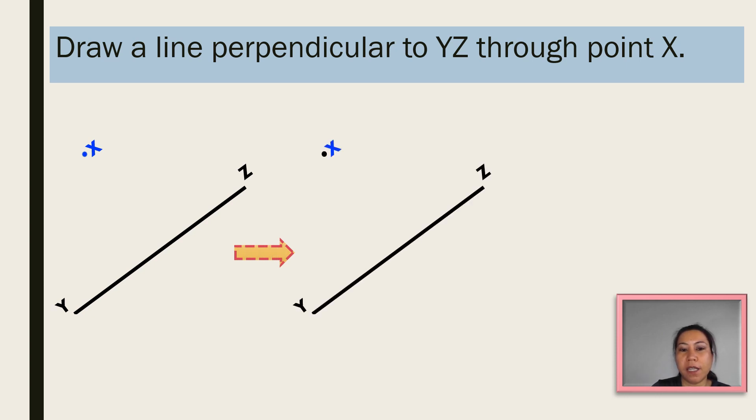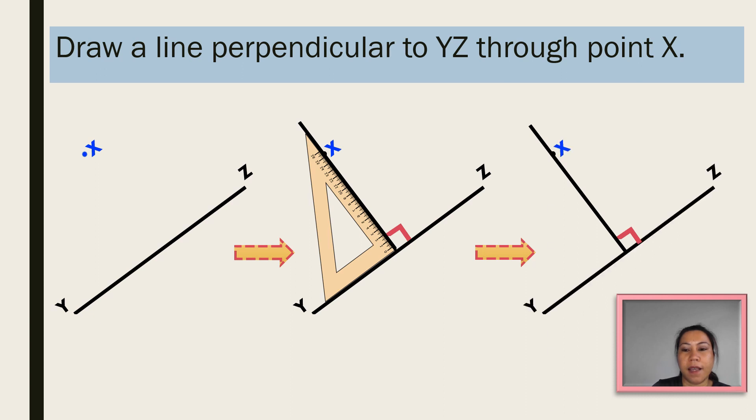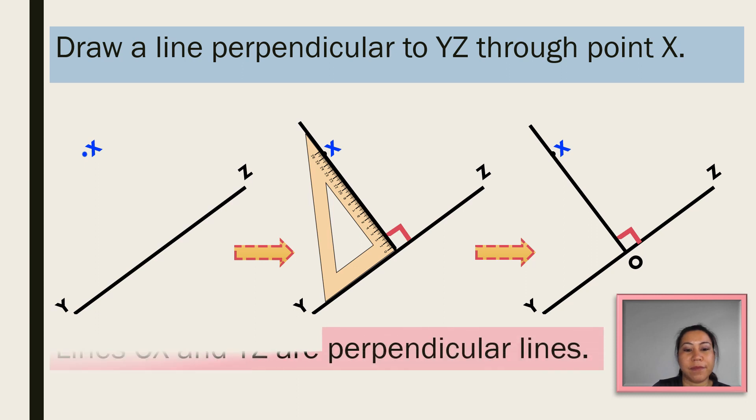Simply, you just get your set square and put it on line YZ. Using the edge of the set square, draw a line passing through the point X and name that line OX. Lines OX and YZ are perpendicular lines. So, line OX is perpendicular to line YZ.